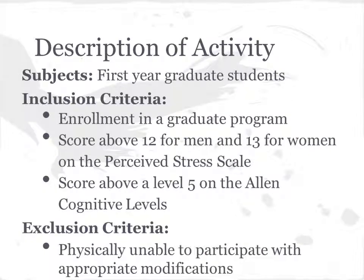Now we will give you a description of our activity. The subjects we used are first-year graduate students that might be experiencing some stress. Our inclusion criteria was they had to be enrolled in a graduate program, a score above a 12 for men and a 13 for women on the perceived stress scale, and a score above a level 5 on the Allen Cognitive Level. Our exclusion criteria was if they were physically unable to participate with appropriate modifications.